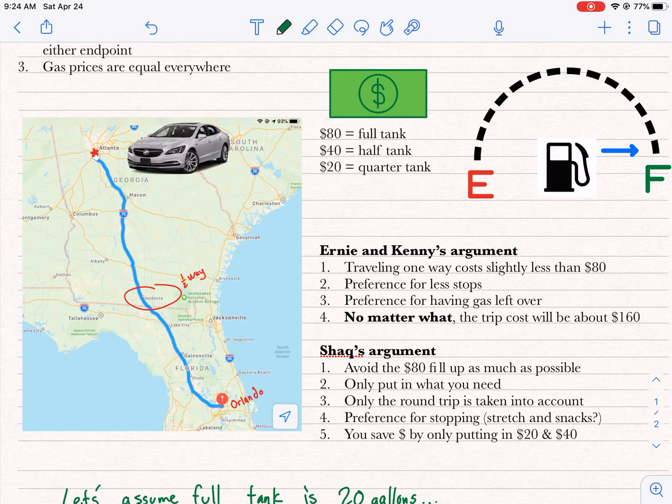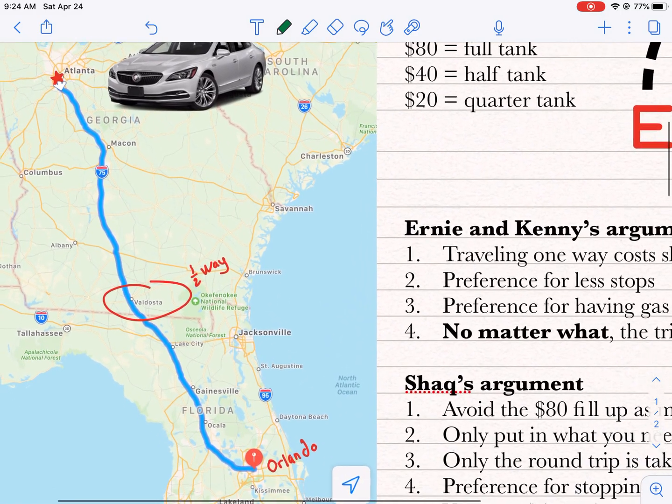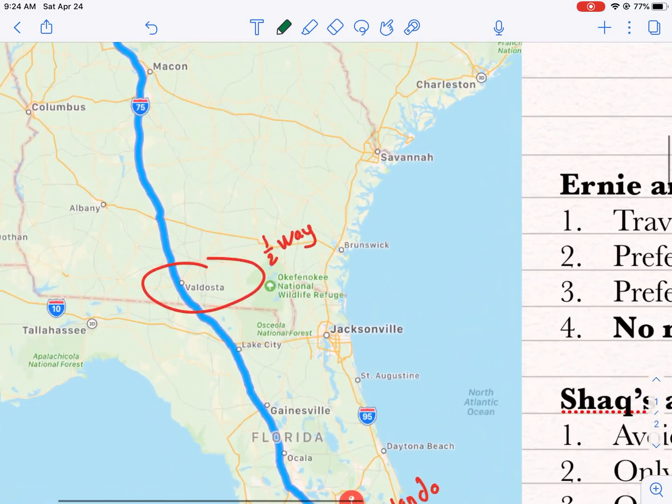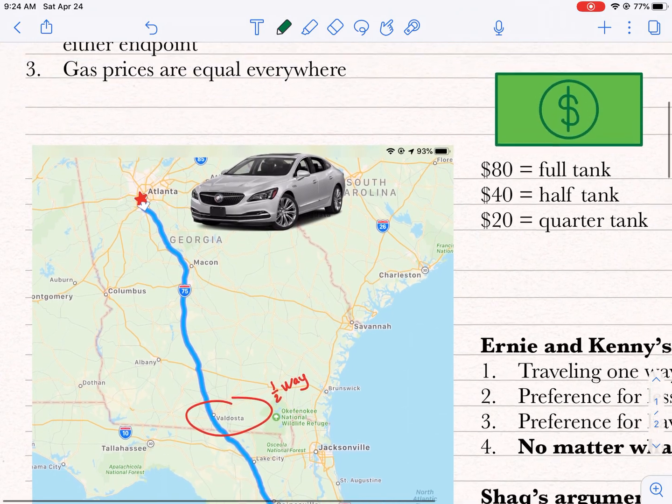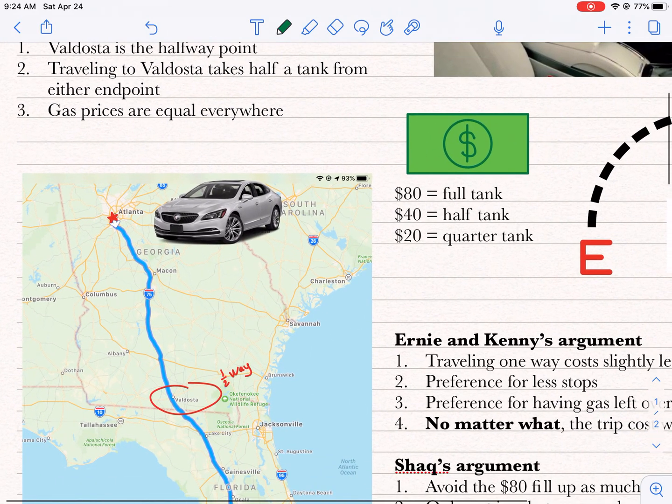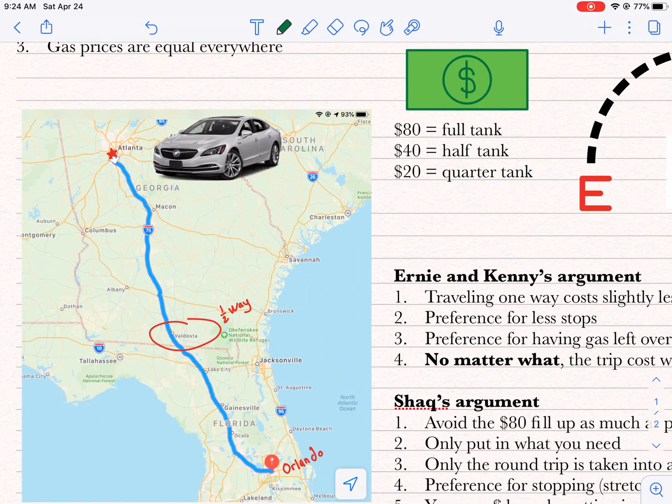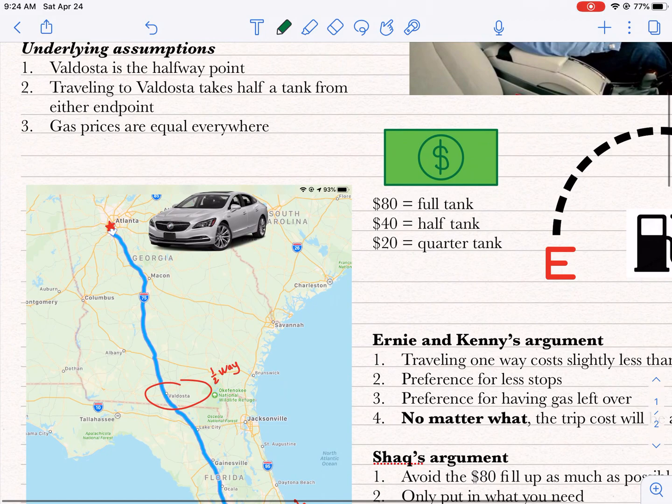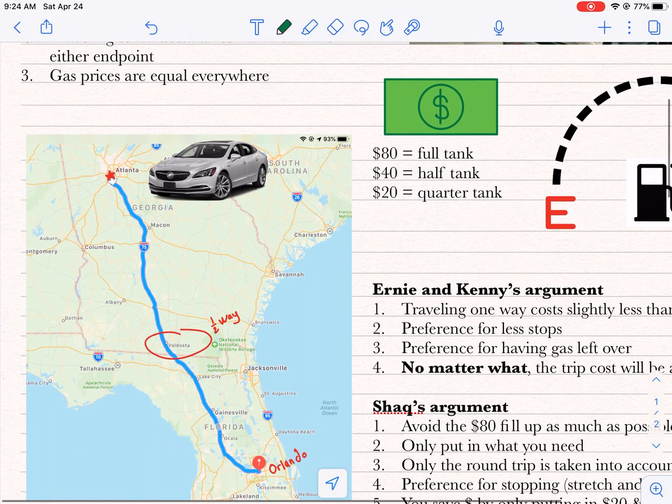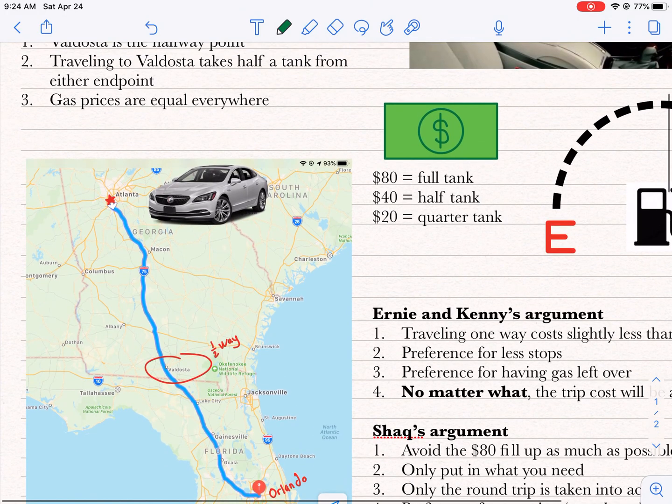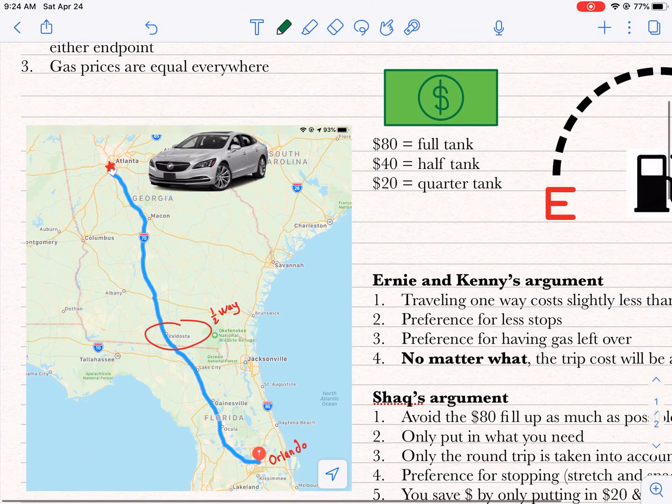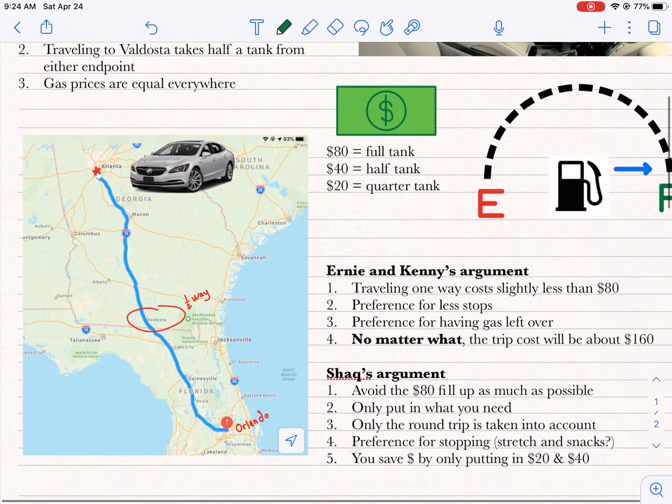If we're looking here, here's Orlando at the bottom, and then at the top we have Atlanta, and you can see Valdosta is about halfway. Second thing, traveling to Valdosta takes half a tank from either endpoint. So if it's indeed the halfway point, then it's going to take half a tank to get there. And then we're going to assume that gas prices are equal everywhere.